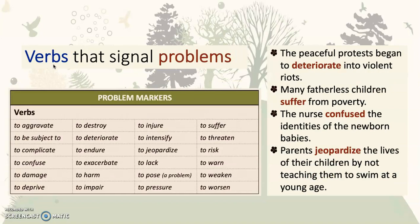Here are verbs that signal problems: to affect, to aggravate, to be subject to, to complicate, to confuse, to damage, to deprive, to destroy, to deteriorate, to endure, to exacerbate, to harm, to impair, to injure, to intensify, to jeopardize, to lack, to pose a problem, to pressure, to suffer, to threaten, to risk, to warn, to weaken, and to worsen.